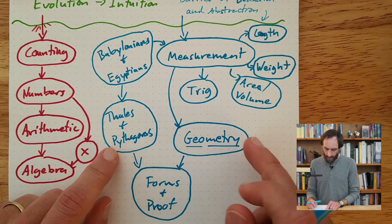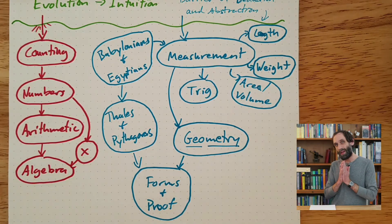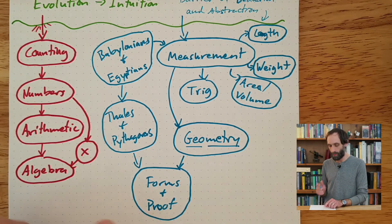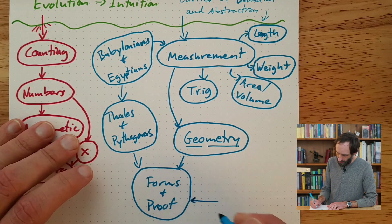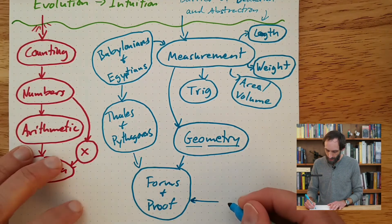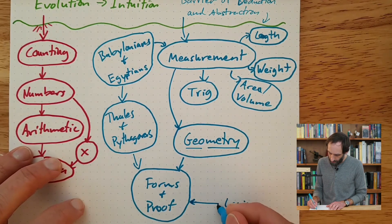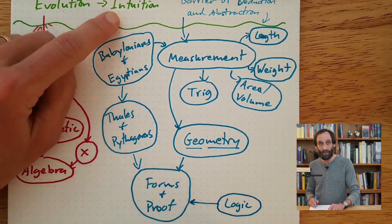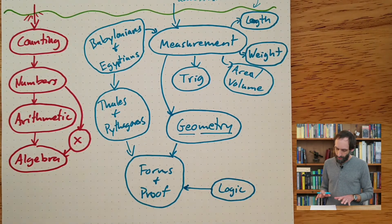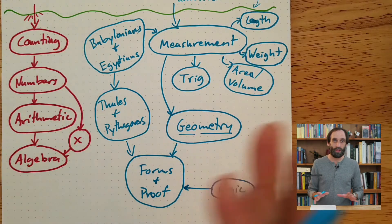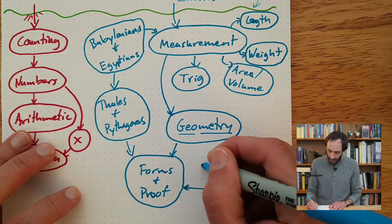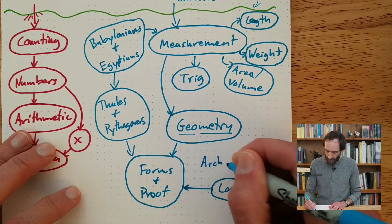So we have Thales and Pythagoras going in the direction of forms and proof. Once we start proving things, one key tool we need is logic. This is typically studied in a geometry course because in order to write good proofs, you need logic. Logic is something you have an intuition about as well — it comes from our intuitions originally. Ancient societies like the Babylonians were using logic, but it got formalized with the Greeks. The person who really wrote the original book formalizing the study of logic was Aristotle — the Greek philosopher who wrote this foundational work on logic.